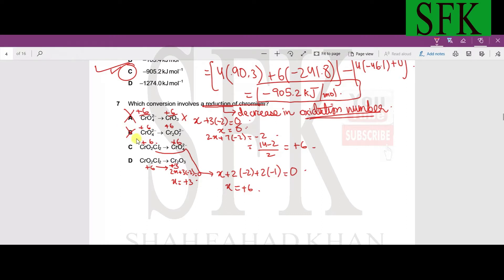In the first answer option the chromium oxidation state is not changing, so no redox reaction at all. The second one as well, not changing. But in the last option it's changing from plus six to plus three, so therefore this is the correct option because our oxidation number is decreasing from plus six to plus three.